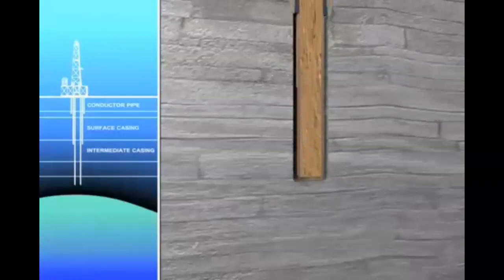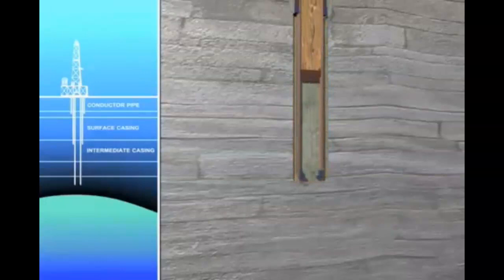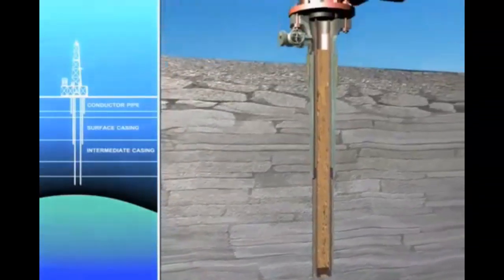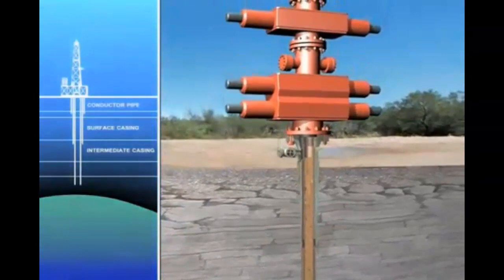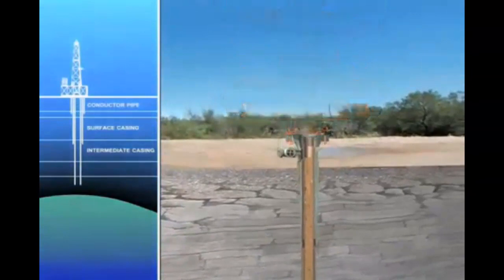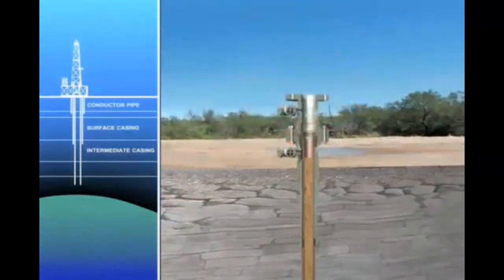After the section is drilled, casing is lowered in the well and cemented in place. The previous blowout preventer is removed, the wellhead section is installed, and another blowout preventer is installed.